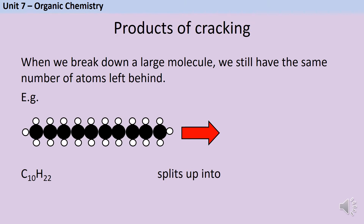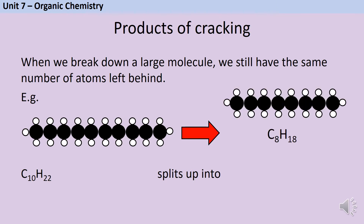Conservation of matter means that the number and type of atoms cannot change during a chemical reaction. When we break apart a large alkane like this decane molecule, if we make a smaller alkane like this octane molecule, we can count up the number of carbon and hydrogen atoms that have gone into that, and whatever's left over we can use to make a second product. If you look closely you'll see that we have two carbon atoms left over.